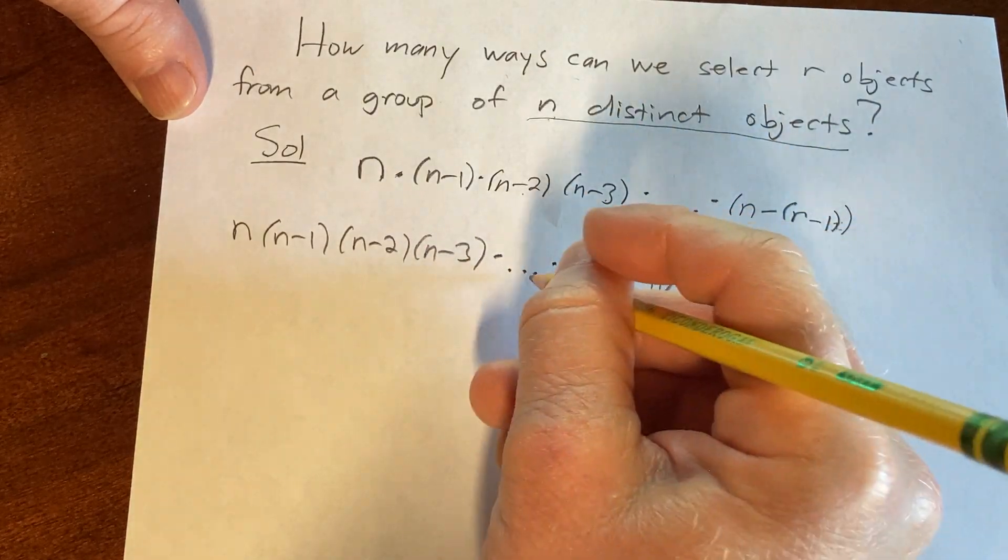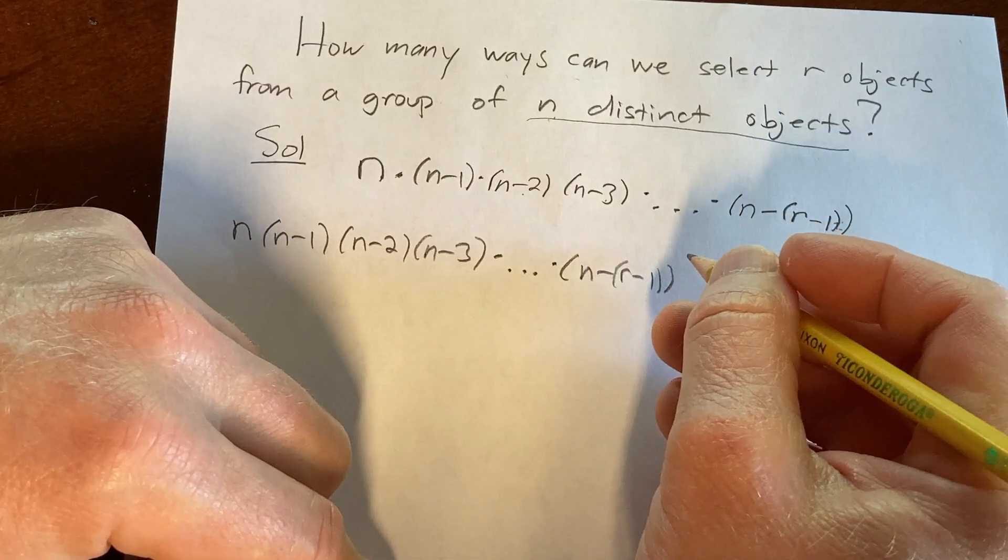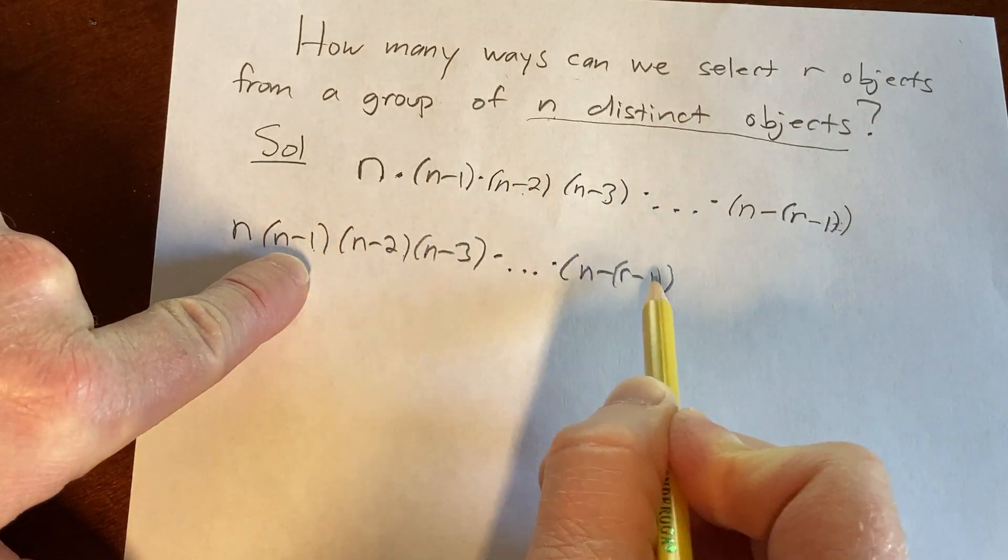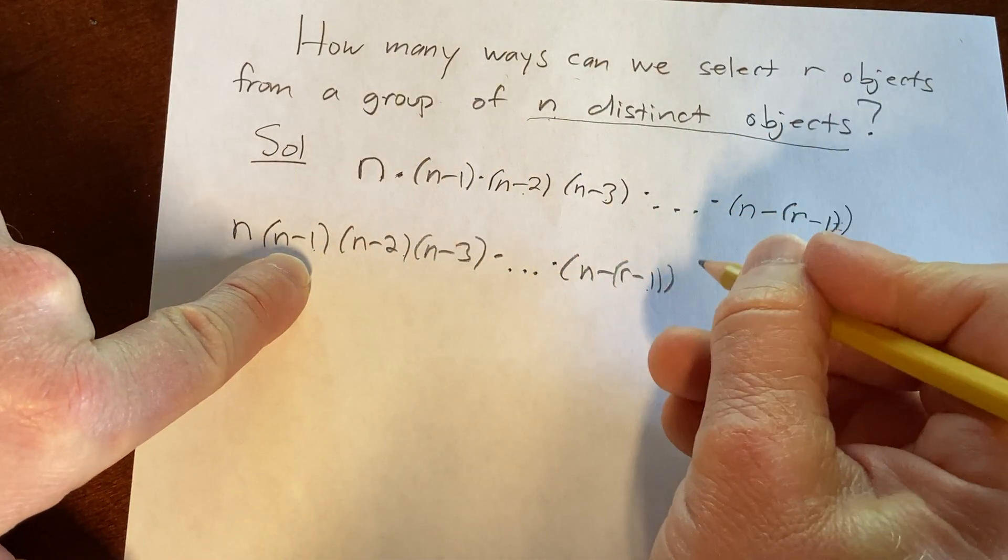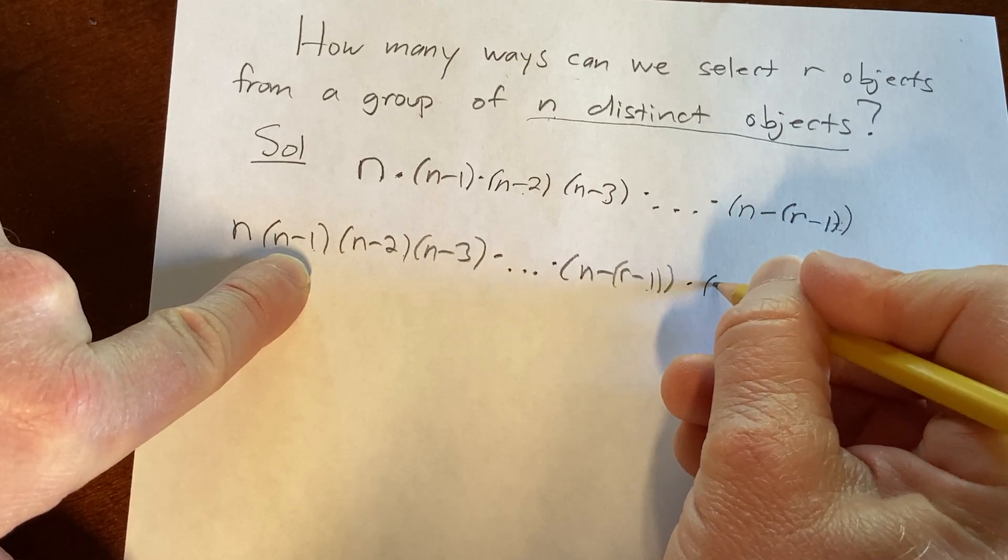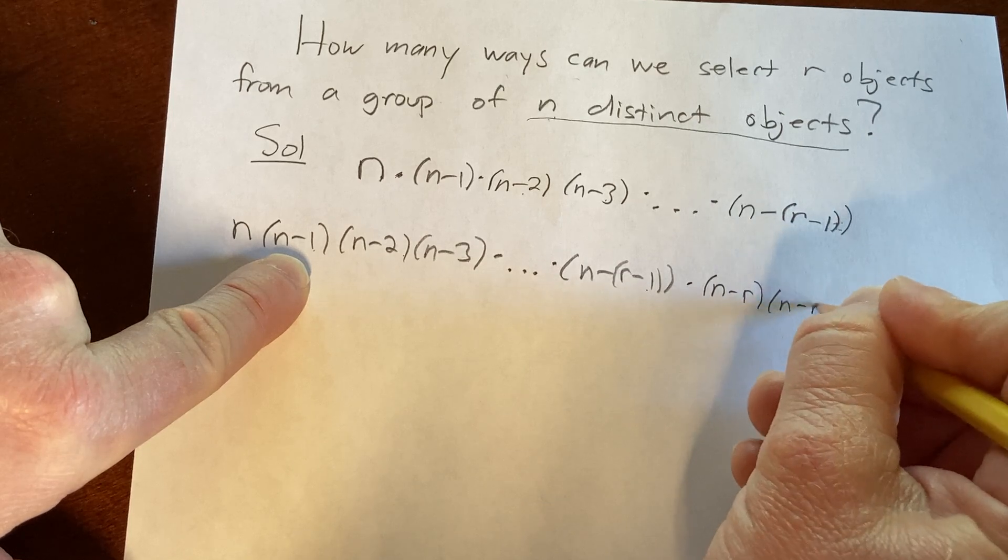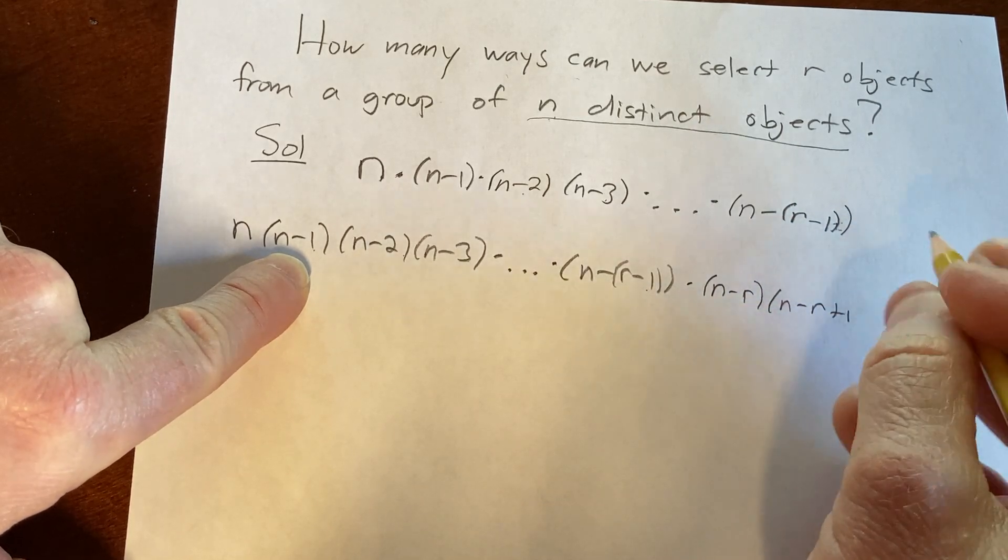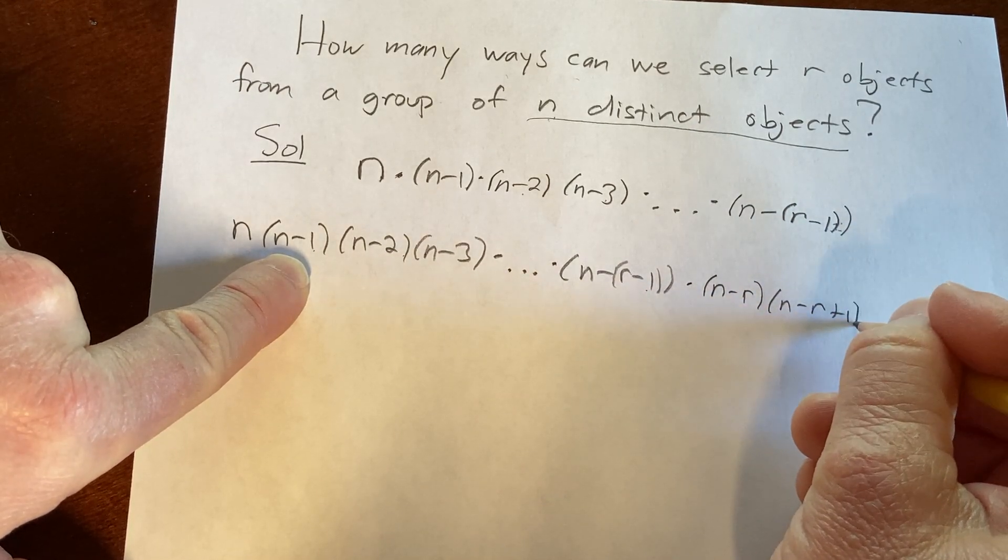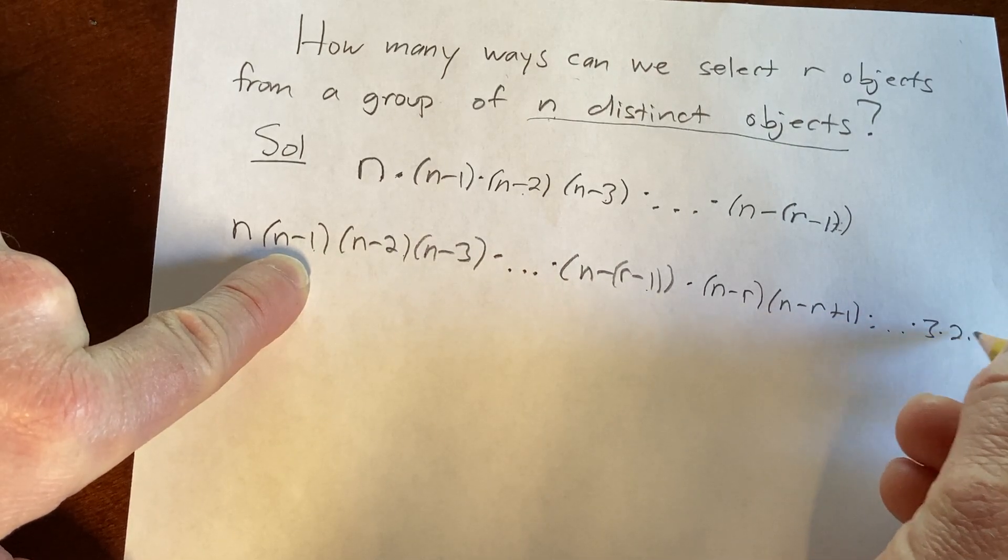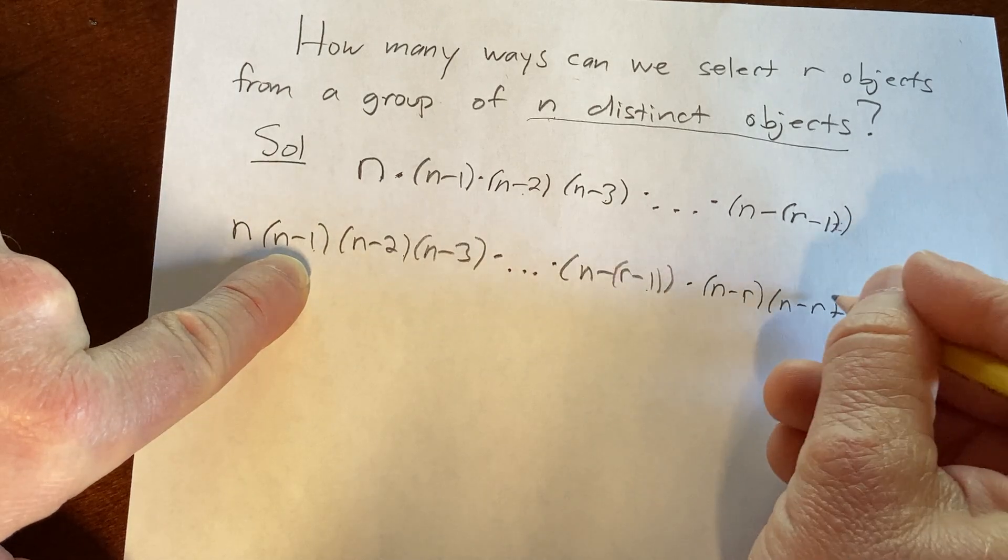And then so what you want to do now is you want to finish this. So the next one, notice here this is 1, 2, 3, r minus 1. So if you follow the pattern, the next one is going to be r. So I'm going to write n minus r, n minus r plus 1, times dot dot dot times 3, 2, 1. Actually there's a parenthesis here.